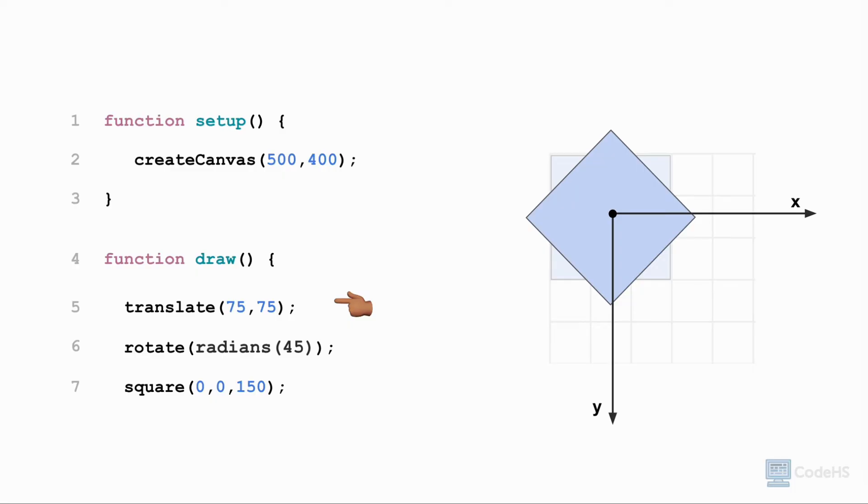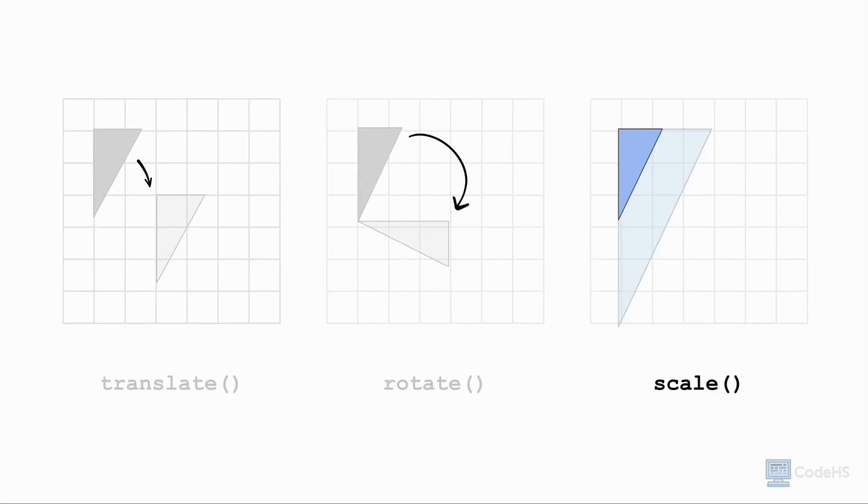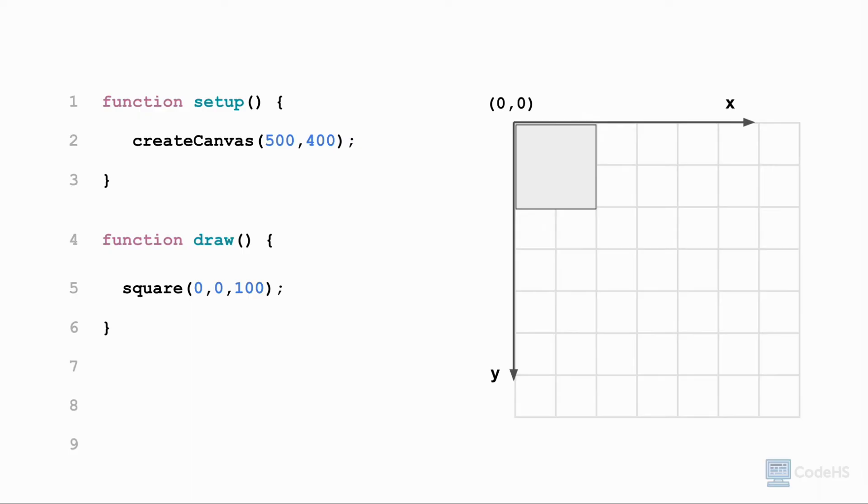The transformation that causes 2D shapes to stretch and shrink vertically or horizontally by a constant factor is called scale. To change the scale of the size of a shape in P5.js, we use the scale function. Let's transform the scale of the square that is currently 100 pixels wide and tall. The first argument passed to the scale function scales a shape by a given percentage expressed as a decimal. For example, if you want to expand the shape by 100%, we call scale 1.0.